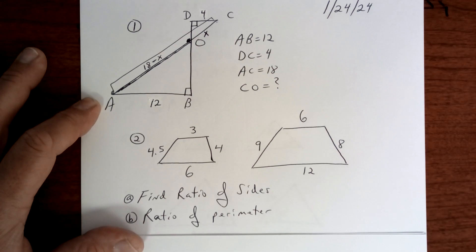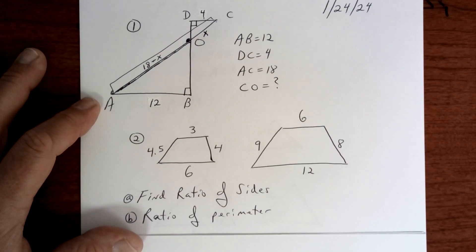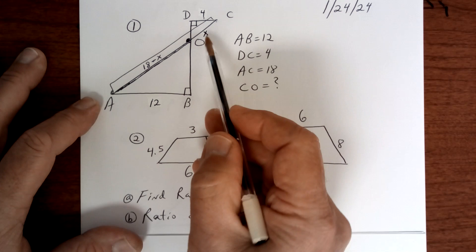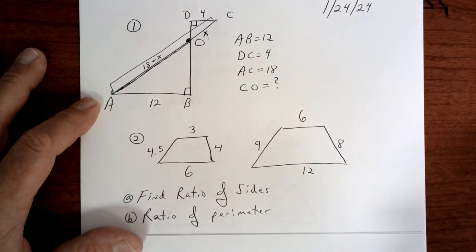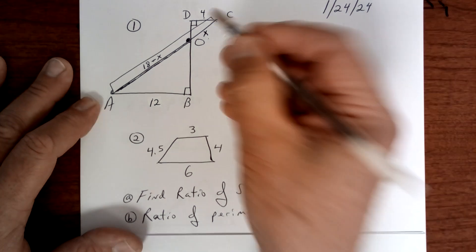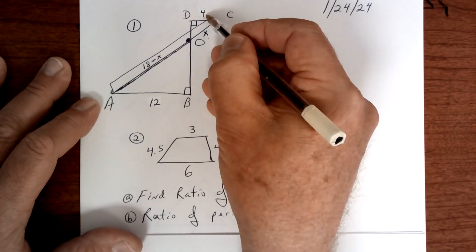So the trick there is to put an X — you have to know to do that. Now let's set this thing up. I'm going to go from the little triangle to the big triangle.